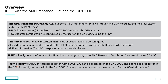There are no flow record match fields or collect fields to configure on the CX 10K — it's either on and collecting IP fix records for all traffic traversing the DSM, or it's off. All valid packets monitored as part of the IP fix metering process will generate flow records for export. Only IPv4 traffic traversing the Pensando DSMs is captured. Traffic Insight is regarded as an internal collector within AOS CX, with data accessible via CLI and API.